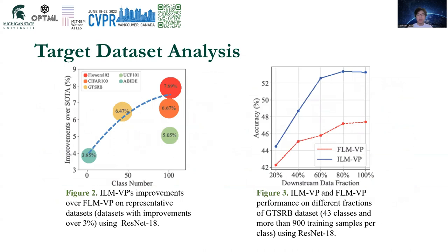Through our experiments over a large number of target datasets, we find that ILM-VP becomes more powerful when it comes to tasks with a larger label space. Figure 2 shows target datasets with at least 3% accuracy improvement using ILM-VP compared with FLM-VP on ResNet. Target datasets with the highest number of classes correspond to the most significant accuracy improvement brought by ILM-VP. Figure 3 compares the performance of ILM-VP and FLM-VP versus target training dataset size, from 20% to 100% of the entire GTSRB dataset. ILM-VP consistently outperforms the baseline FLM-VP, and the improvement becomes more significant as the data scale grows.